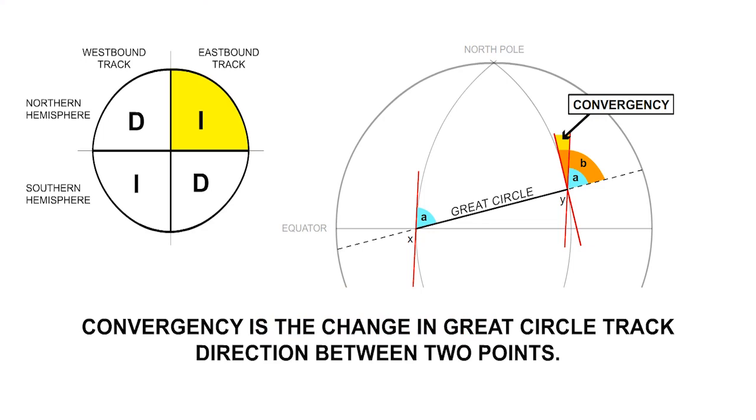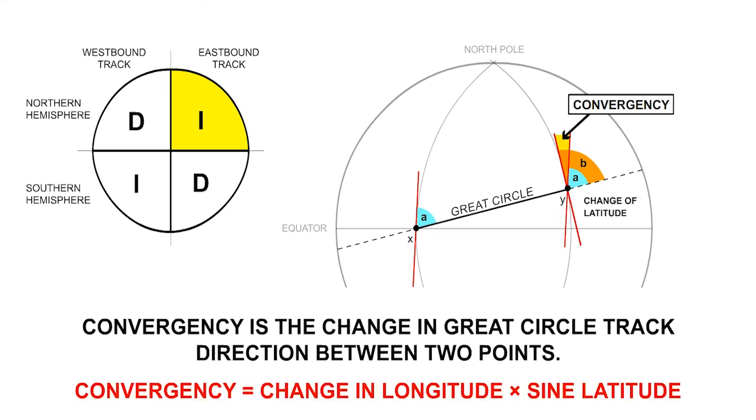We also have to modify our formula slightly, because in this case, the two meridians are not crossed at the same latitude. Unless flying due east or west, there will be some element of north or south change of latitude between the meridians. In this case, we cannot use the simple convergency formula of change of longitude times sine of latitude, because there are two latitudes to consider.